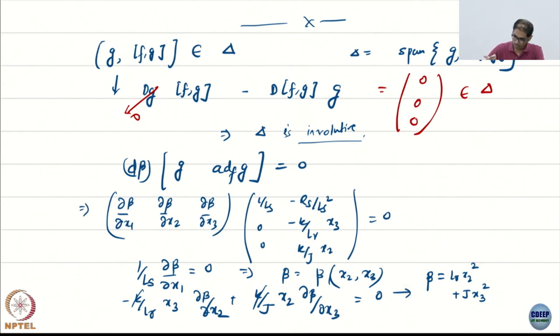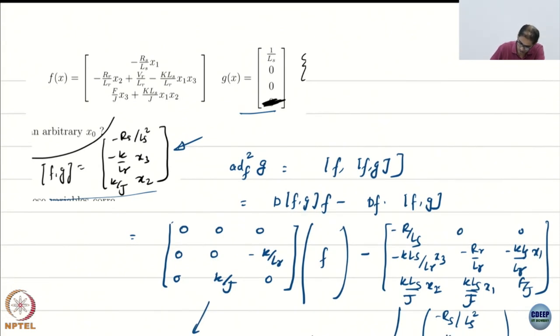Now, what we are saying is that we are not going to pre-specify the output. We are not given an output. We are going to try to find the best output under which I get complete feedback linearizability. And that is this guy. Lr x2 square plus j x3 square. And now that we have, you know, this output, why don't we try. I am going to say h of x is half lr x2 square plus half j x3 square. I will put a half. What about h dot?